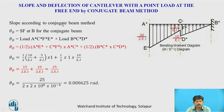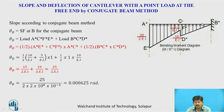The slope θB equals the shear force at B for the conjugate beam. The shear force equals the total upward loading, which is a trapezoidal load (over AC) plus a triangular load (over BC). The trapezoidal load = (1/2)×(10/EI + 5/EI)×1, and the triangular load = (1/2)×1×(10/EI). Solving, θB = 0.000625 radians.